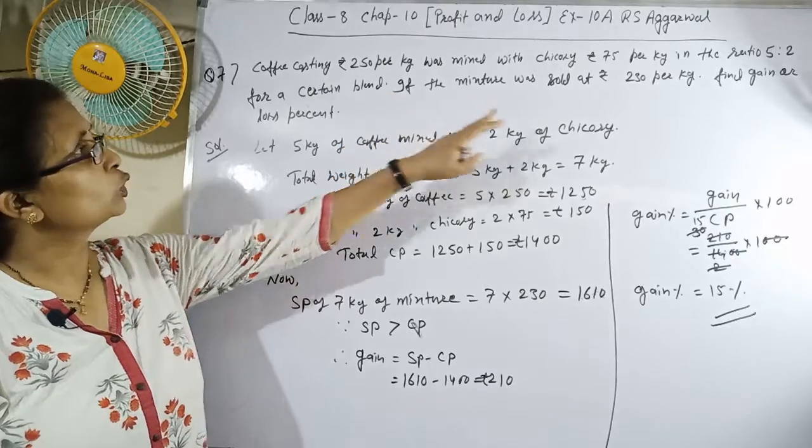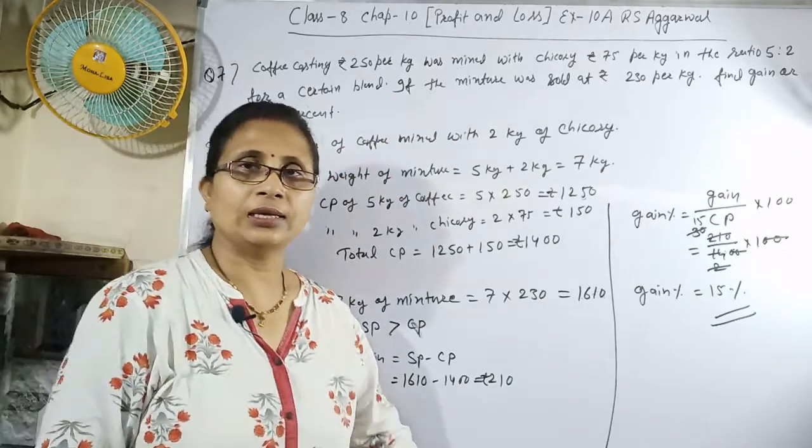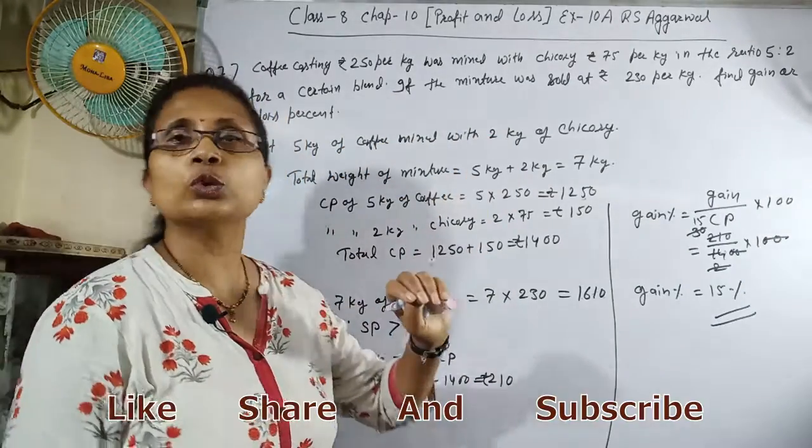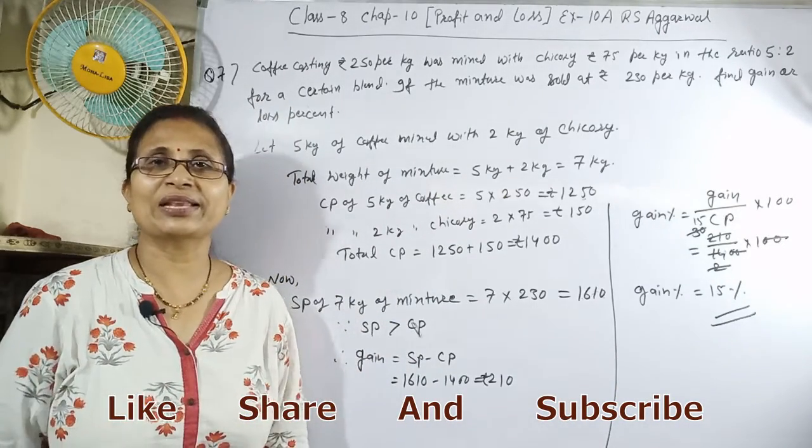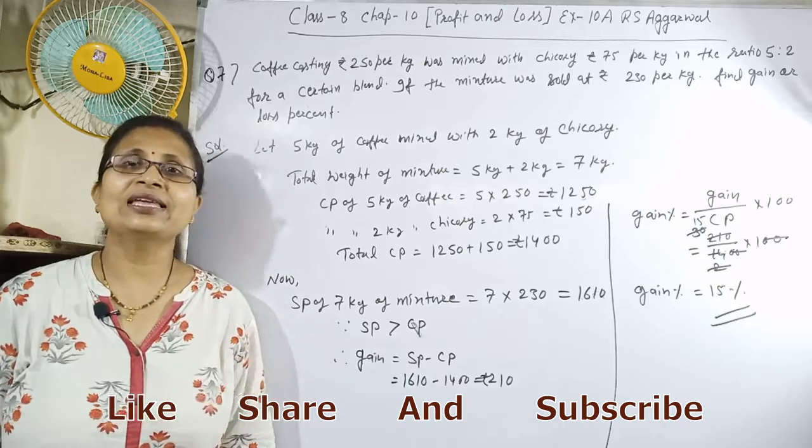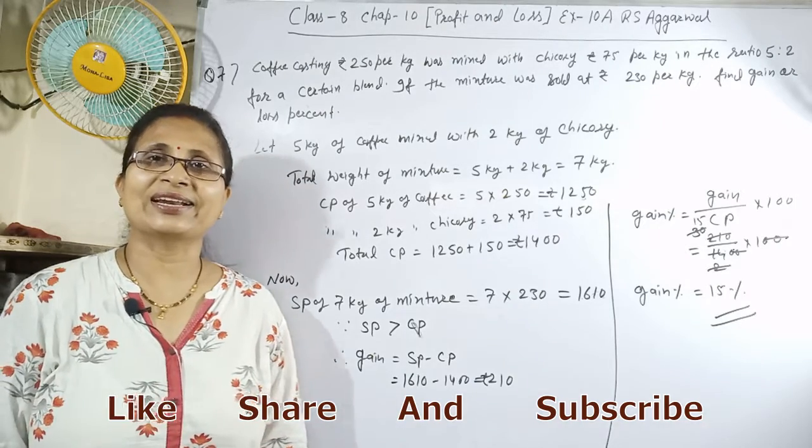So when the mixture is sold at Rs. 230 per kg, there is 15% profit. I hope the solution is clear. Please subscribe to the channel, press the bell icon, like and share.